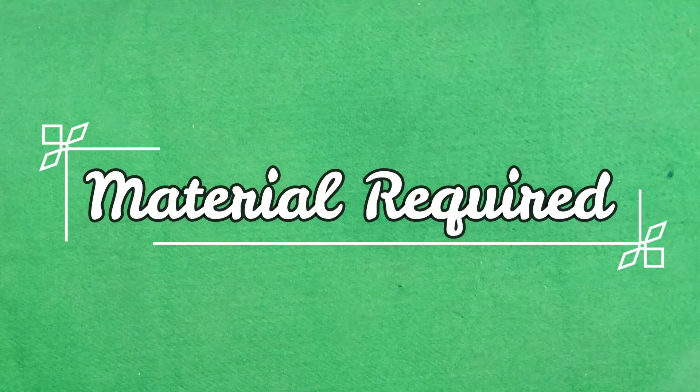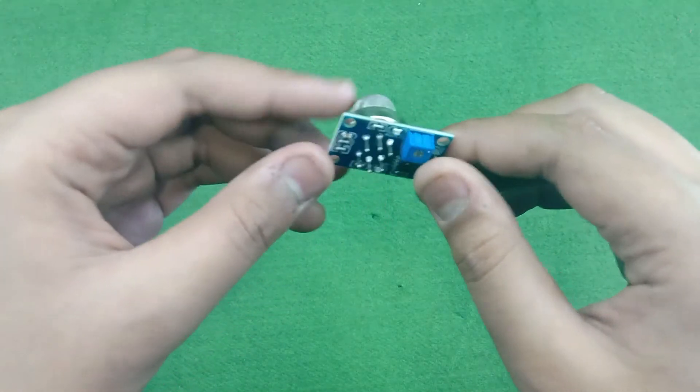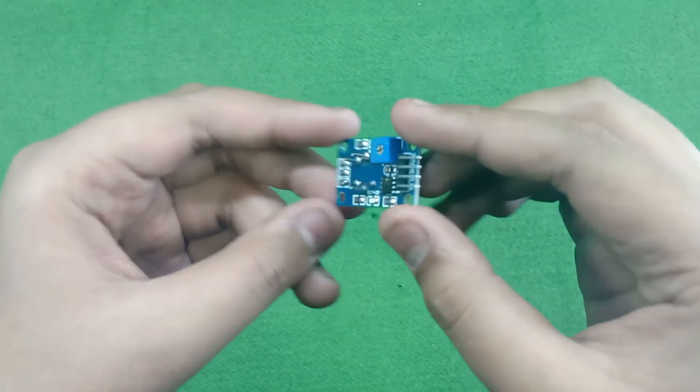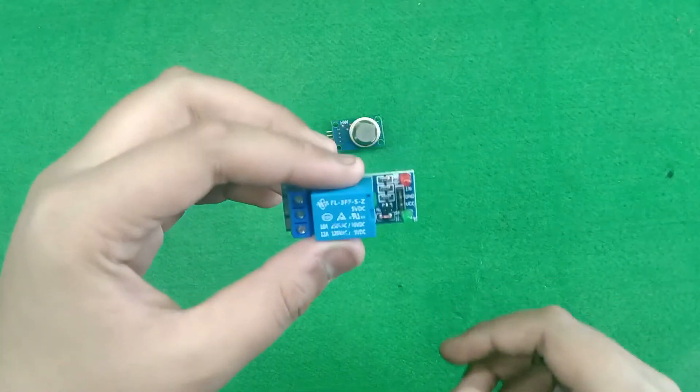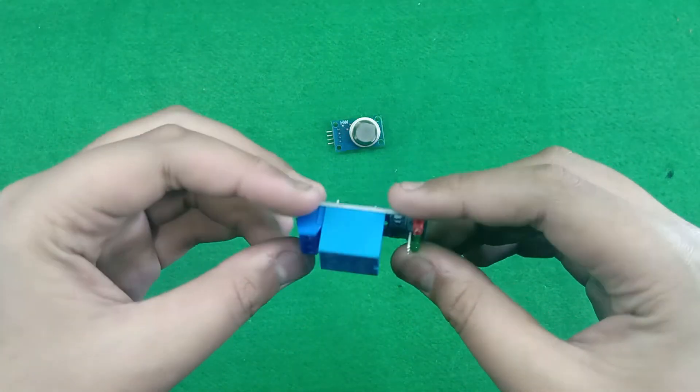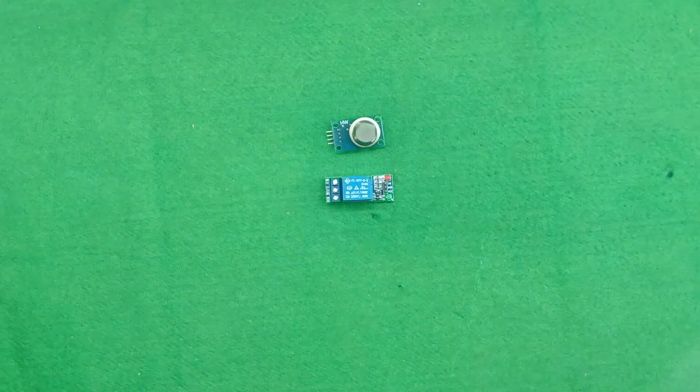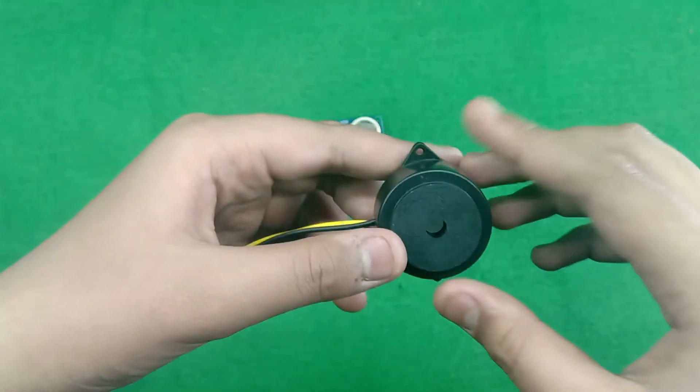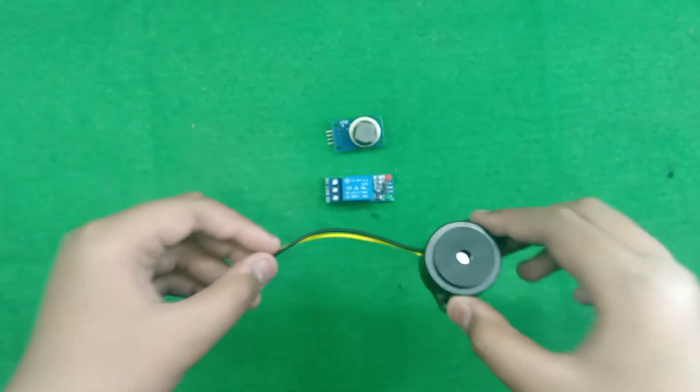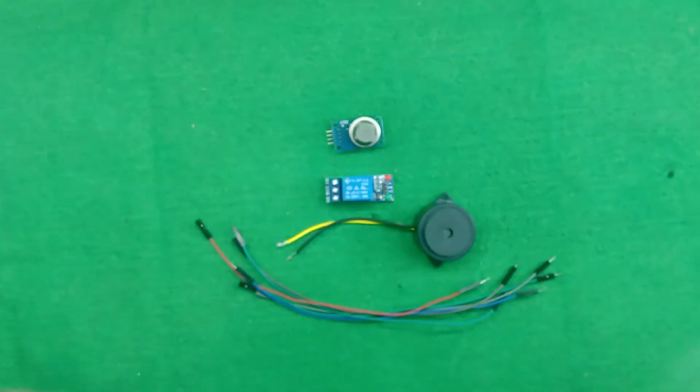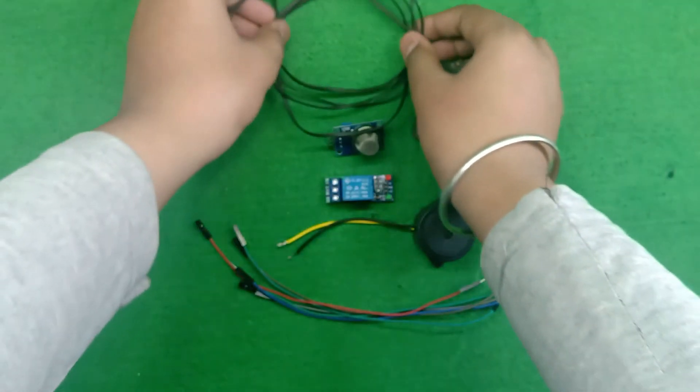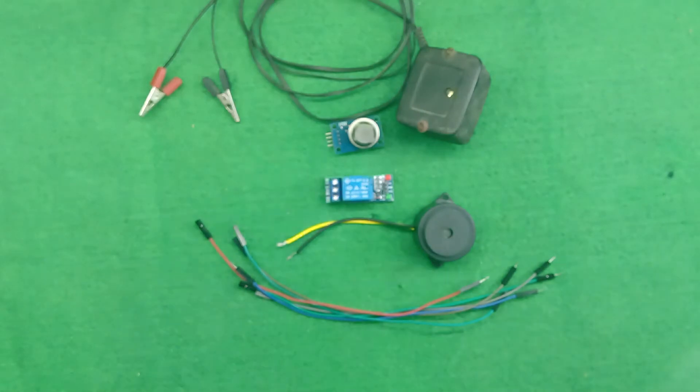Friends, for making this project, we need some components like MQ90 Smoke Sensor or you can say the gas sensor, one channel relay module, 10 volt or 5 volt buzzer, some jumper wires and a 5 volt mobile charger. So, let's make it.